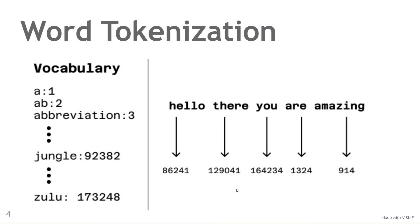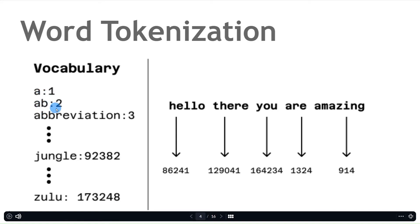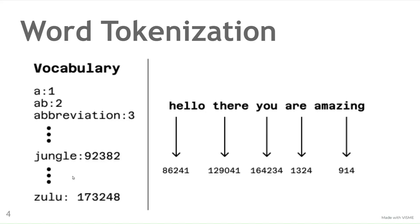Next is word tokenization. We have a vocabulary of words: A corresponds to 1, AB corresponds to 2, abbreviation corresponds to 3, and so on. We get all those words and assign them a unique integer. Then to tokenize a new piece of text, we just map each word to its corresponding integer. For example, hello maps to 86,241 and there maps to 129,041. Now, how do we generate this vocabulary? We're not going to just stuff all the English words in, because that would be wasteful. Instead, we look at our training corpus — a dataset of text — and get all the unique words to construct the vocabulary.